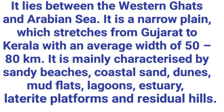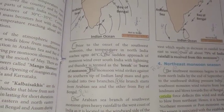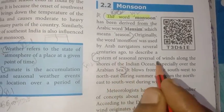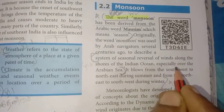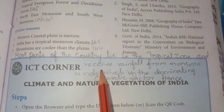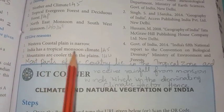Give reasons: The Western Coast lies between the Western Ghats and the Arabian Sea. It is a narrow plain stretching from Gujarat to Kerala with an average width of 50 to 80 kilometers, characterized by sandy beaches, coastal sand dunes, mud flats, lagoons, estuaries, lateral platforms, and residual hills. India has a tropical monsoon climate because most parts of the country lie in the tropical zone and receive rainfall from monsoon winds, which is the dominating climatic factor.